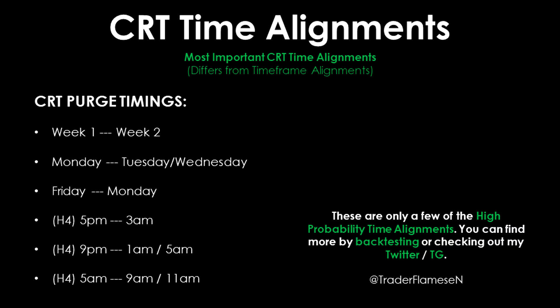There are other time alignments as well, which I've covered on Twitter. These are not absolute and not the only ones — there are many more you can find by backtesting. Wait for the CRT to form at certain times, then look to see when purges occur. Note these times and check your data for recurring patterns. Other good purge times include 1am, 3am, 6am, and between 8 and 10am. Study this on your own and find the suitable time alignment for yourself.